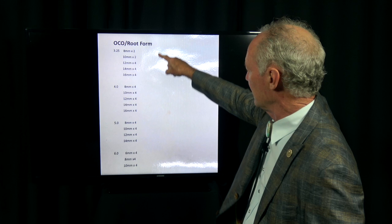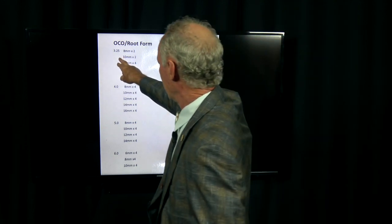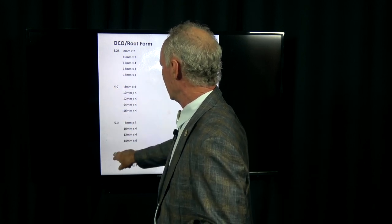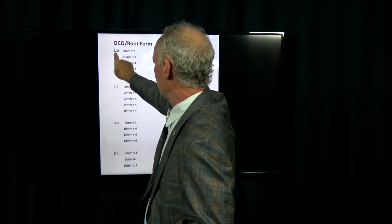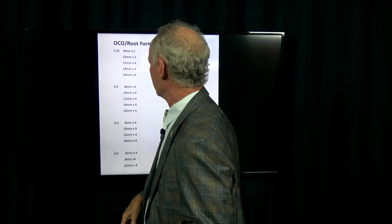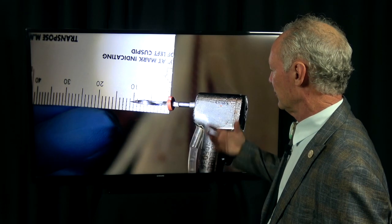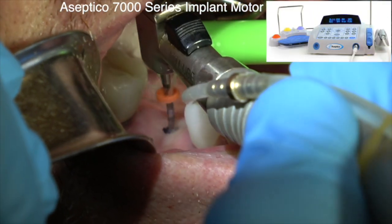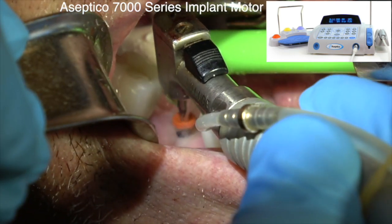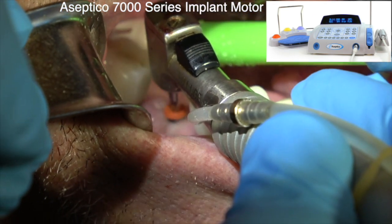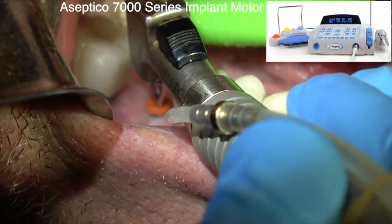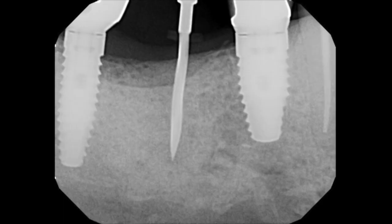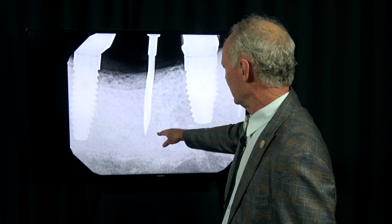These are the different implants being used: 3.25, 4.0, 5.0, and 6.0. With each of these implant sizes, the drill is going to be a little bit smaller in diameter than the implant. In this case, we felt like we had 12 millimeters, so I'm going to drill my pilot hole through the tissue staying parallel to the bicuspid tooth, mesial to the implant to be placed. This is the PA of the pilot drill in the osteotomy.